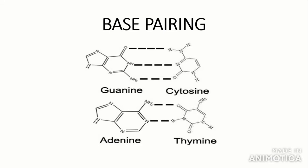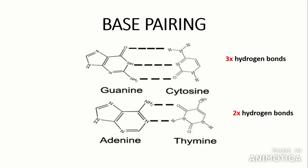You need to know that bases pair with a specific complementary base. Guanine pairs with cytosine, and adenine pairs with thymine — or adenine pairs with uracil in RNA. Guanine and cytosine form three hydrogen bonds, while adenine and thymine, or adenine and uracil, only form two hydrogen bonds. Base pairing is extremely important in processes such as DNA replication and transcription, and in forming the double helix structure. You don't need to know the structures of the bases, just how they pair and the number of hydrogen bonds.